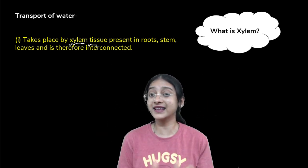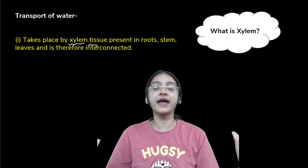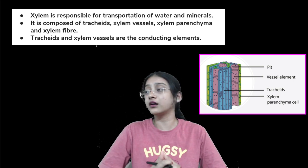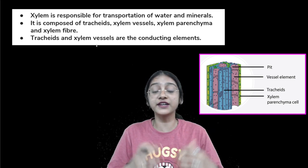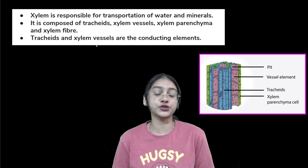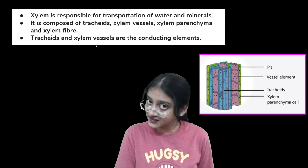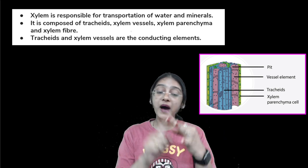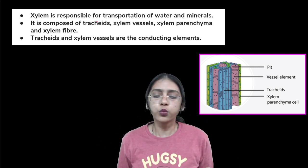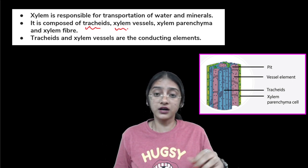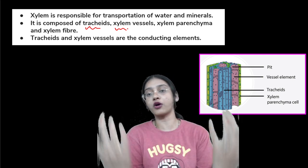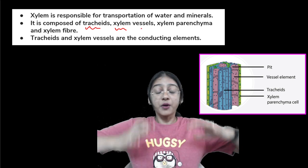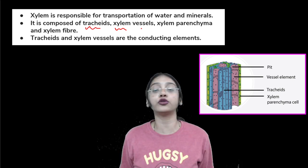So what is xylem? If you studied the tissue chapter in 9th standard, you would have understood the different types of cells present in xylem. Xylem is responsible for transportation of not just water but also minerals. It is made up of tracheids, xylem vessels, xylem parenchyma, and xylem fibers. Tracheids and xylem vessels are involved in transportation of water; xylem vessels are mainly responsible for transportation of large amounts of water.